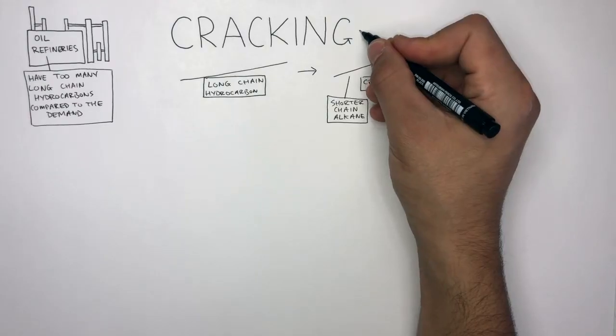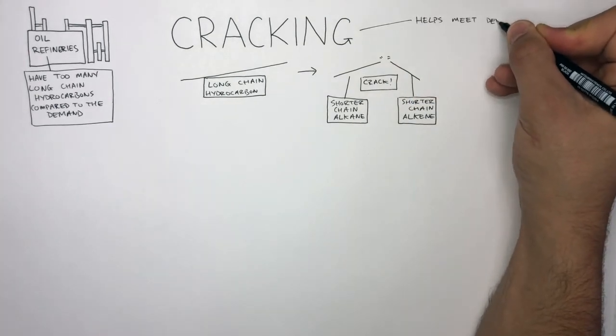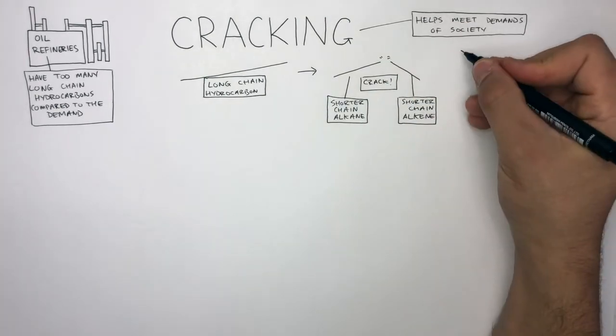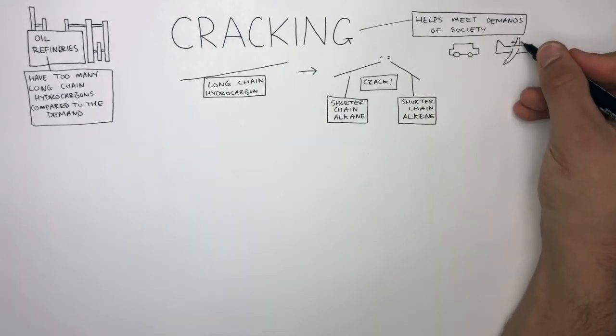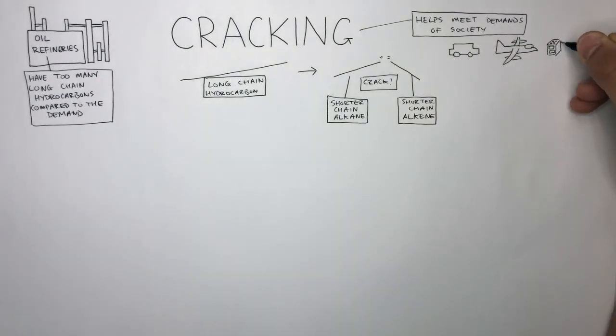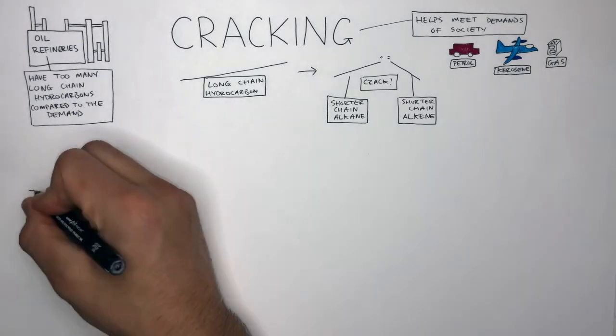Cracking is a very important chemical reaction because it helps meet the demands of society. Unfortunately, crude oil does not provide us with enough petrol or kerosene or natural gas. Therefore, to help meet these demands, we crack the longer chain hydrocarbon, such as fuel oil, which is in surplus. And then we use those shorter chain alkanes to meet the demands of petrol, kerosene and natural gas.